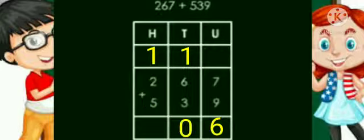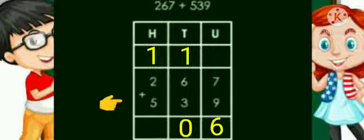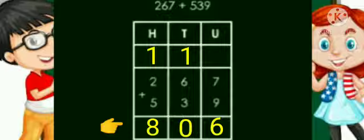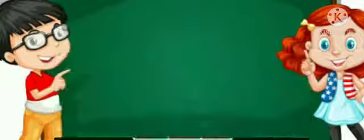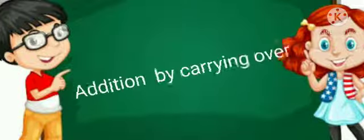Now we will add the hundreds: one plus two plus five — we get eight. So we got the answer 806. I hope children you all must have understood how to carry out the addition by carrying over.